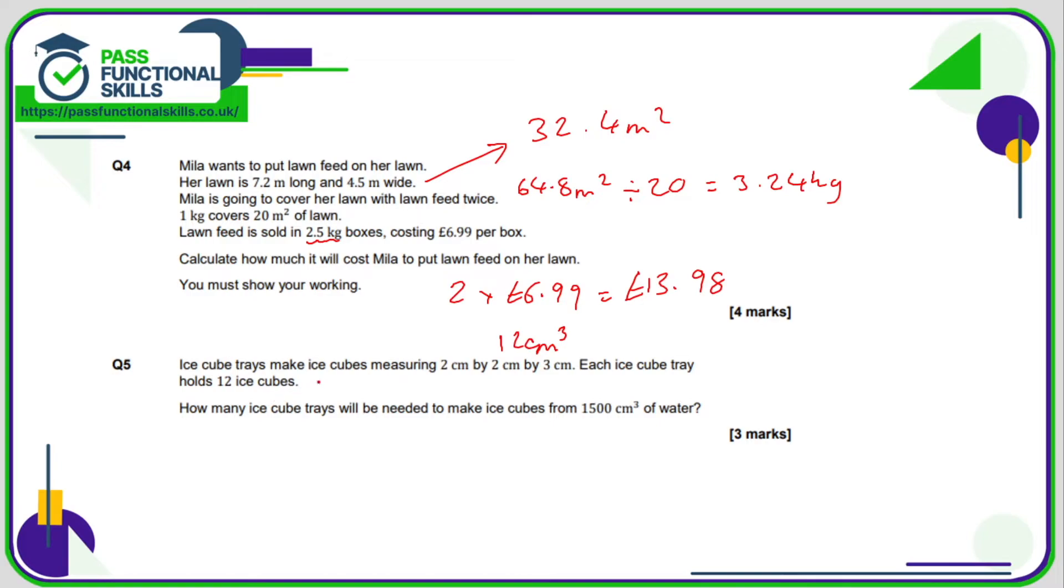Now, if a tray holds 12 ice cubes, a tray will have 144 cubic centimeters: 12 cubic centimeters times 12. So how many ice cube trays will you need for 1500 cubic centimeters? Well, 1500 divided by 144 is 10.4 trays. But obviously you can't have 0.4 of a tray, so we are therefore going to need...